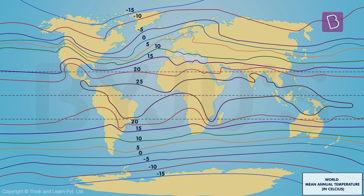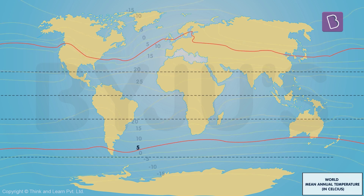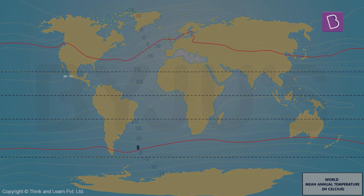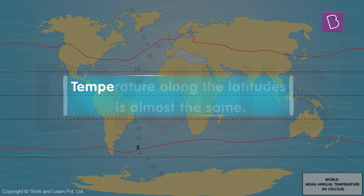The following observations can be made about isotherms. You can see the lines are almost parallel to the latitudes. What does that mean? It means that the temperature along the latitudes is almost the same.